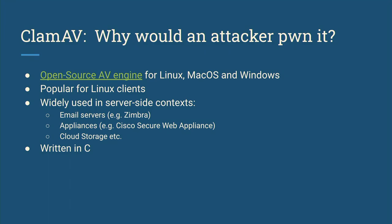The antivirus engine we're going to target today is called ClamAV. It's an open source AV engine for Linux, Mac OS, and Windows, but it's particularly popular for Linux. It's widely used in server-side contexts, so email servers will have it run in the backend and scan each incoming and outgoing email for viruses. There are also some email suites, like Zimbra, where it comes installed by default.